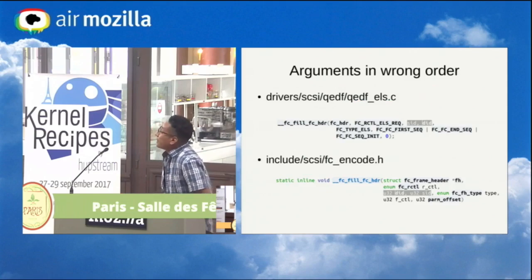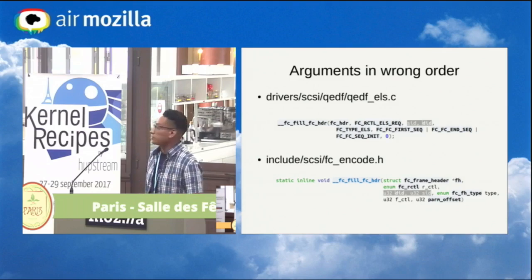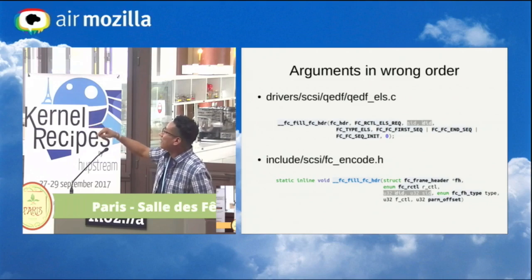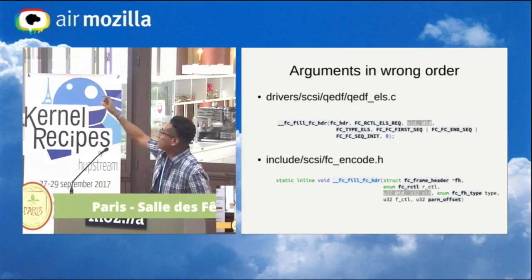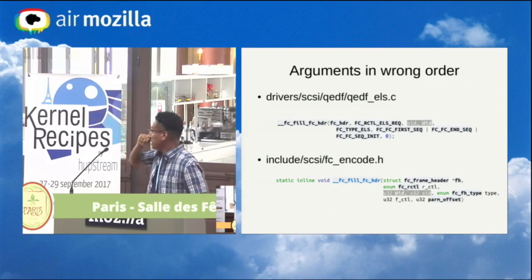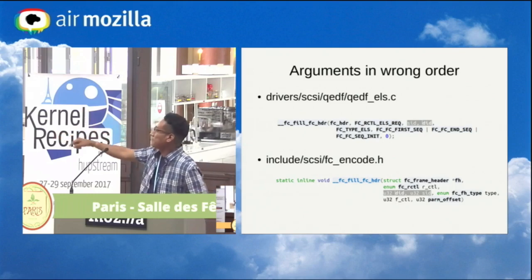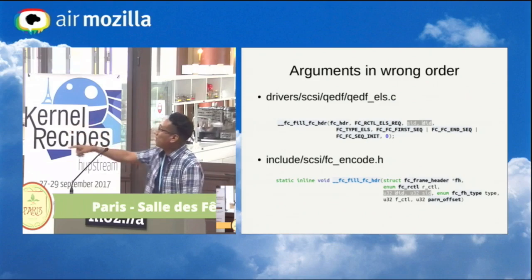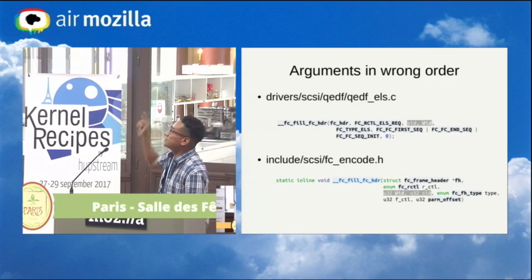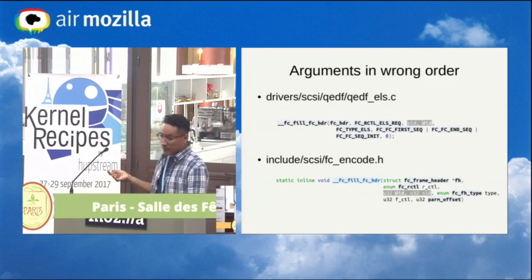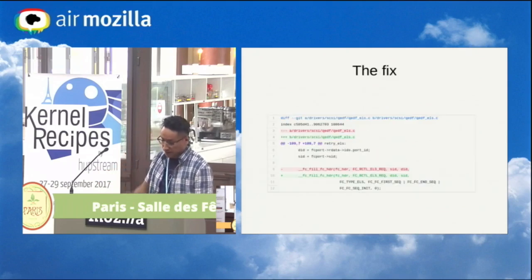Another example: Coverity reported that the arguments when calling a function were in the wrong order. The SID is the source ID and the second argument is the destination ID. Coverity reported something weird, so I checked the function prototype. The prototype first expects the destination ID, and the second argument is the source ID. It actually turned out to be an issue, I sent a fix, it was applied, and everyone was happy.